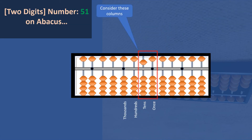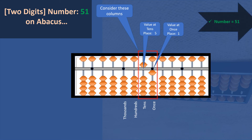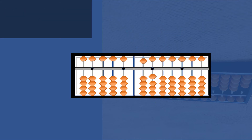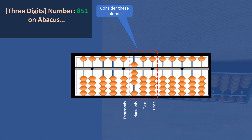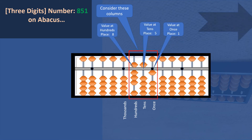How to write 51: one bead at the tens place — the upper bead — has moved towards the bar, and a lower bead at the ones place has moved towards the bar, making the value 51. For three-digit numbers, take 851: at the hundreds place the beads make a value of eight, at the tens place the bead has a value of five, and at the ones place the bead has a value of one — so the number is 851.